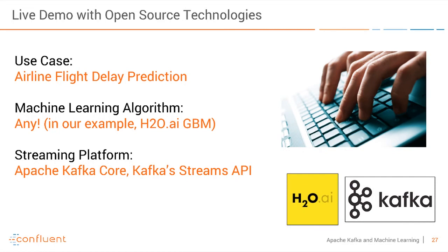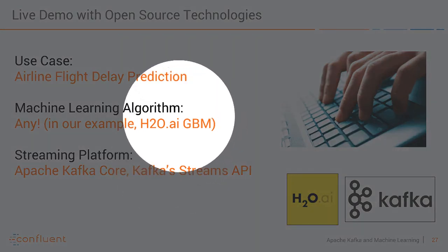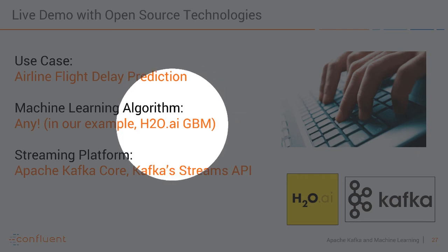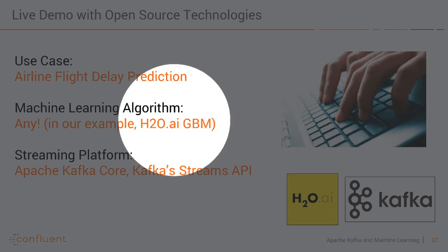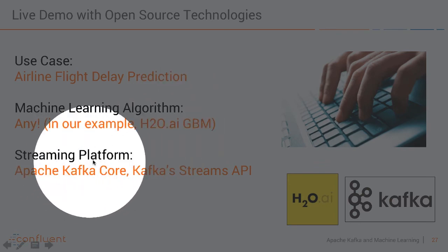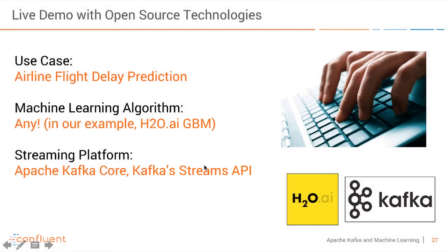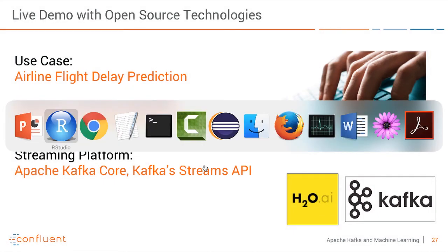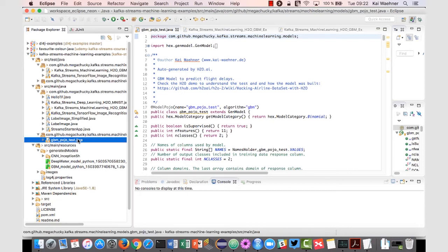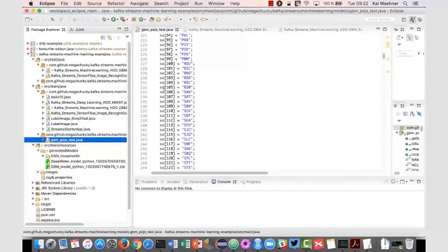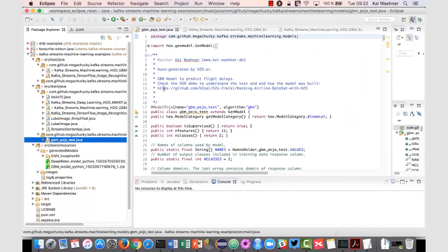Let's go back to our live demo and use case — we're back in the airline flight delay prediction demo. Again we use H2O, but you can use any other technology like TensorFlow or Deep Learning 4J. The important thing is the generated model has to be scalable and performant to meet your requirements. In my GitHub project I also have another example of TensorFlow applied to Kafka Streams, and I'll build other examples like Deep Learning 4J in the coming months. For that, we go to our source code — in this case I use Eclipse as my Java IDE. I want to show you the Java code of the analytic model — this is the decision tree built with gradient boosting from the first step — and this code is now what I really use in my Kafka Streams application.